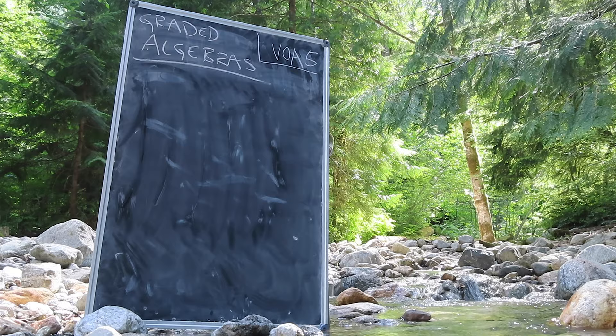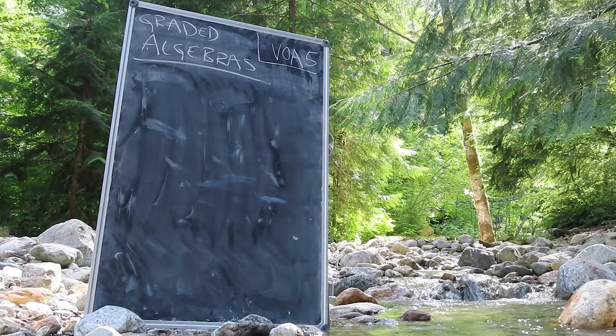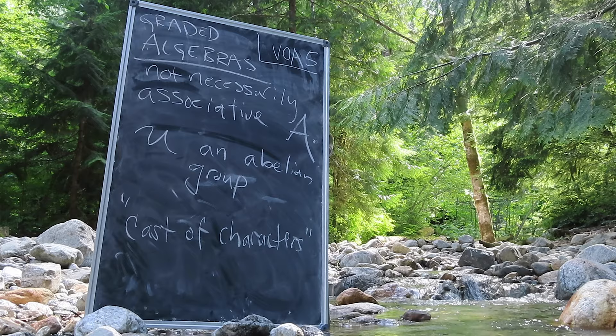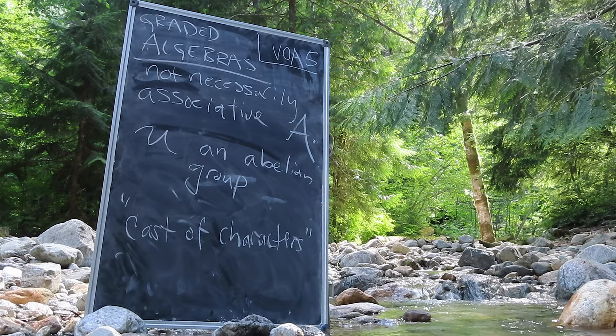So far we've been discussing vector spaces. Let's promote our discussion to algebras by giving them a vector multiplication. Let A be some algebra, and let U be an abelian group. Note that U is supposed to be a Fraktur capital A, but the speaker notes difficulty writing that, so we'll just call it U.